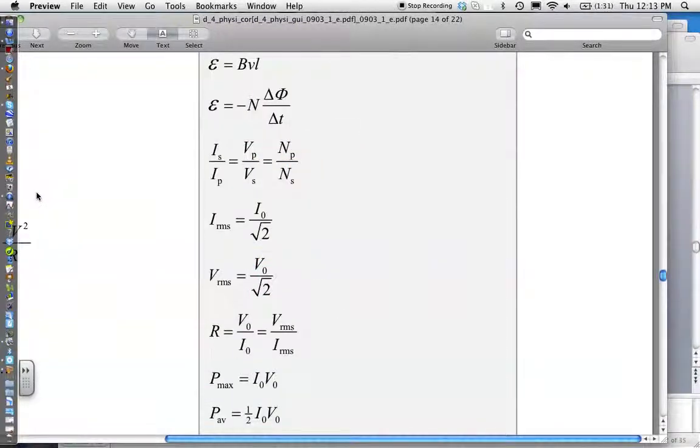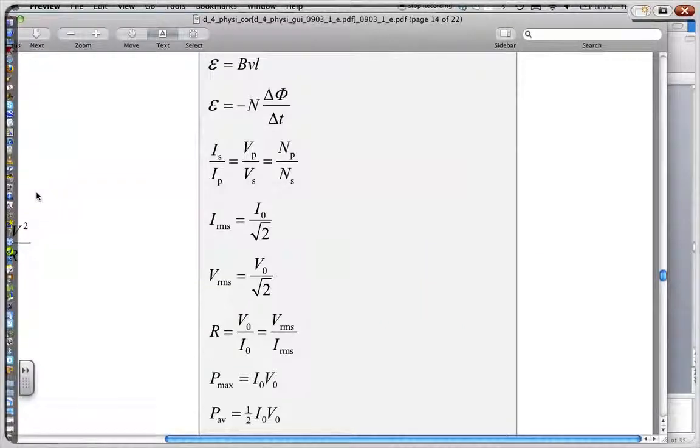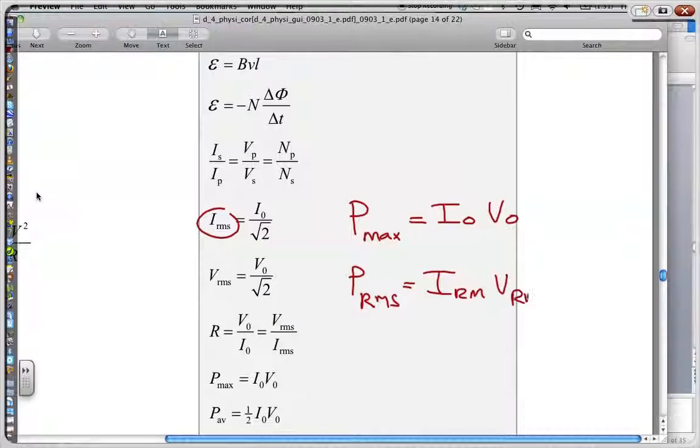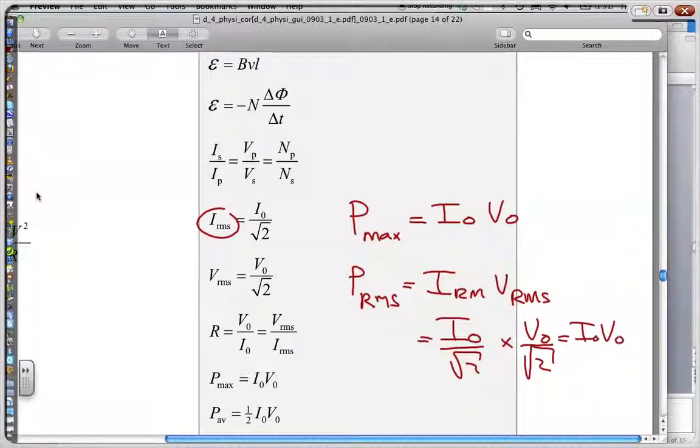Going back to our data booklet, we have that the I RMS, or the root mean squared, is actually given by your maximum divided by the square root of 2. So this is the average amount, you divide it by the maximum amount divided by the square root of 2. So when we look at power, if we had a look at your maximum power, that would equal I0 V0, that would be the maximum amount. Your power RMS, or your average power, would equal your I RMS times your V RMS. So that would equal I0 over the square root of 2 times V0 over the square root of 2, and that equals I0V0 over 2 and that's your power RMS.